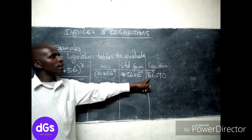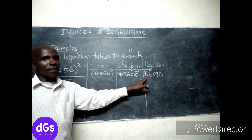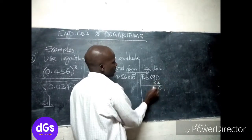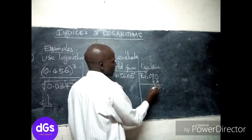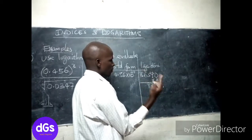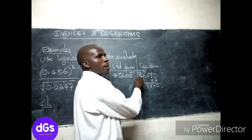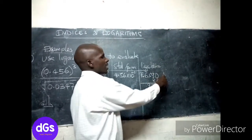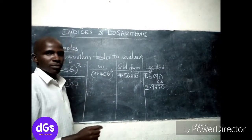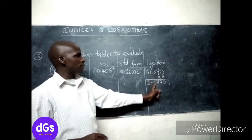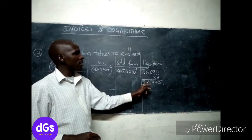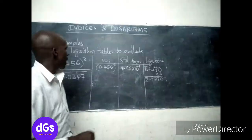Because the number is cubed, on the logarithm side you multiply by 3. So multiplying 0.6590 by 3: 9 times 3 is 27 carry 2; 5 times 3 is 15 plus 2 is 17 carry 1; 6 times 3 is 18 plus 1 is 19, carry 1 positive. Now bar 3 multiplied by 3 is bar 3, and bar 3 plus positive 1 gives bar 2. So the result is bar 2.9770.